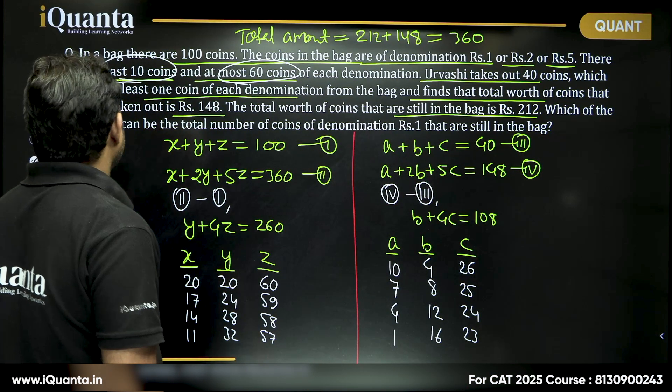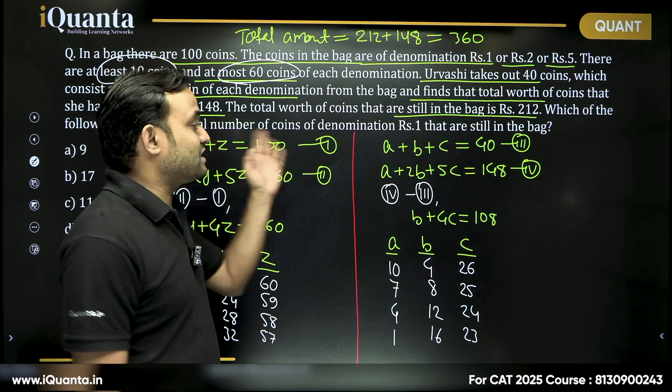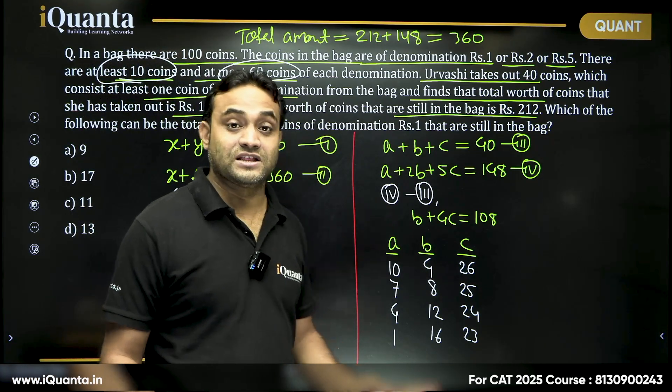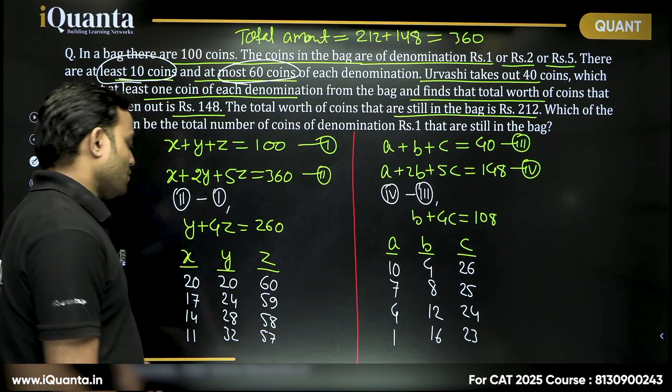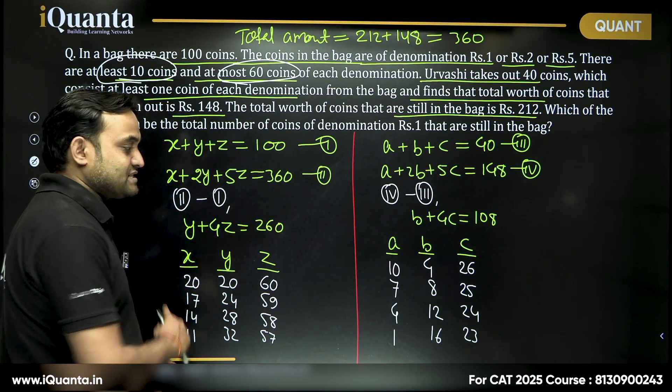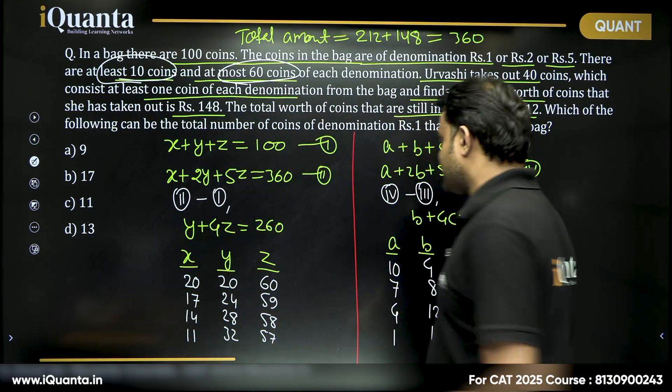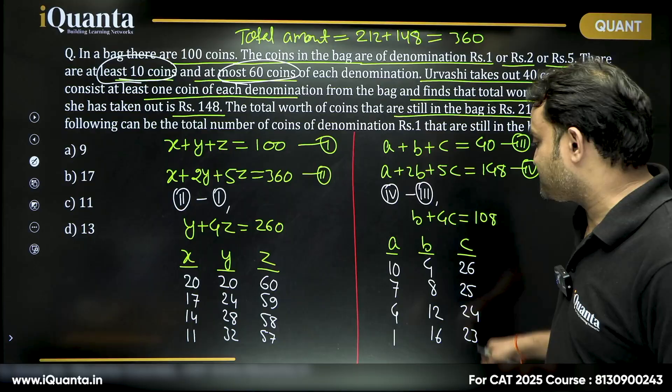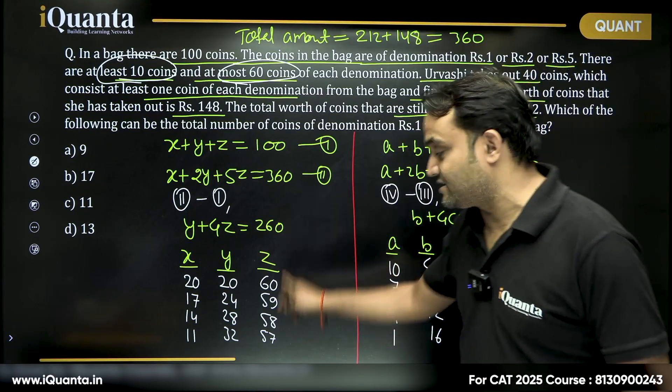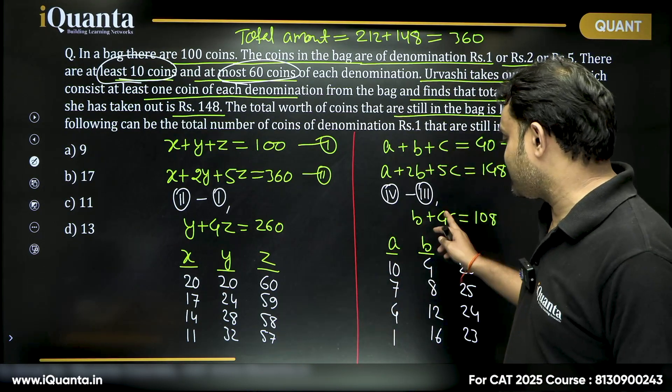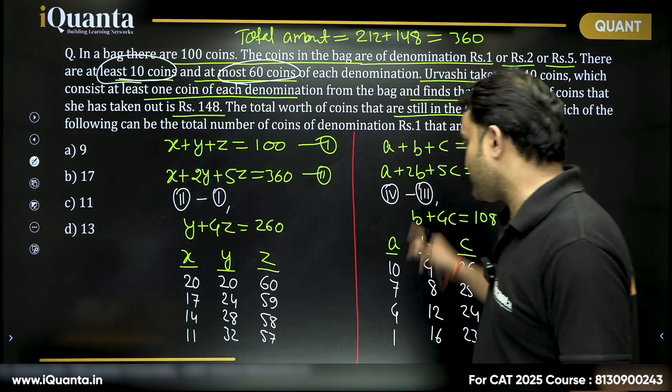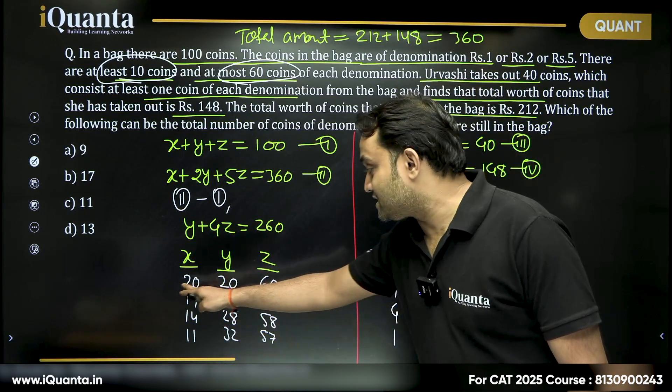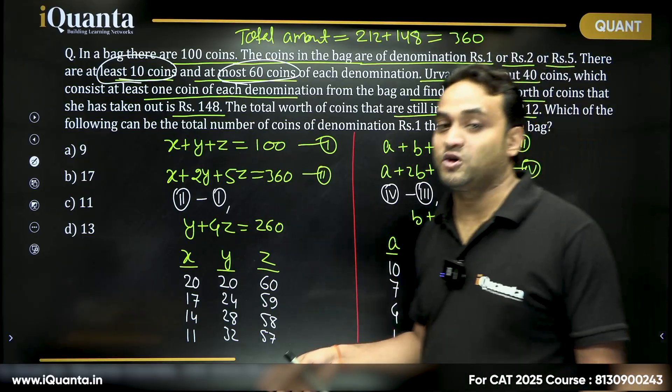Now it says which of the following could be the total number of coins of denomination 1 rupees that are still in the bag. So we can consider one of the cases from here and one of the cases from here which satisfies all the conditions. So you can see the value of c is always lesser here than this one. The value of b is always lesser here than this one and value of a is always lesser here than this one. So any combination from here and any combination from here is possible.